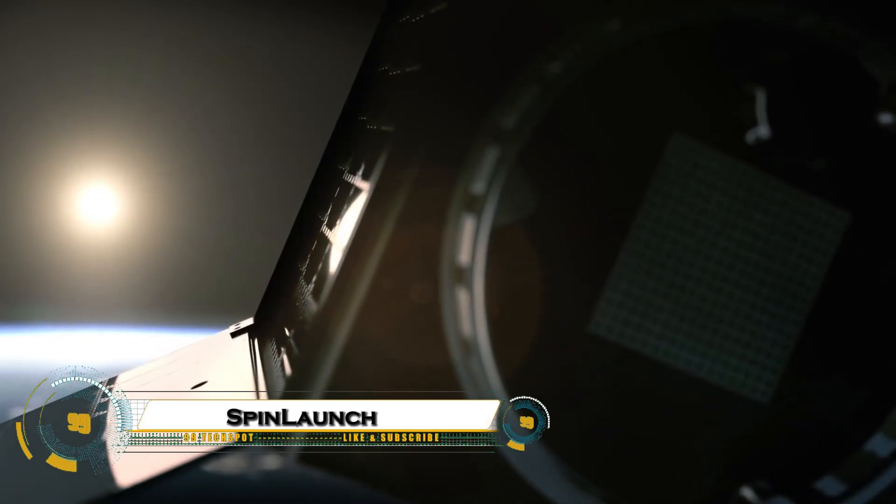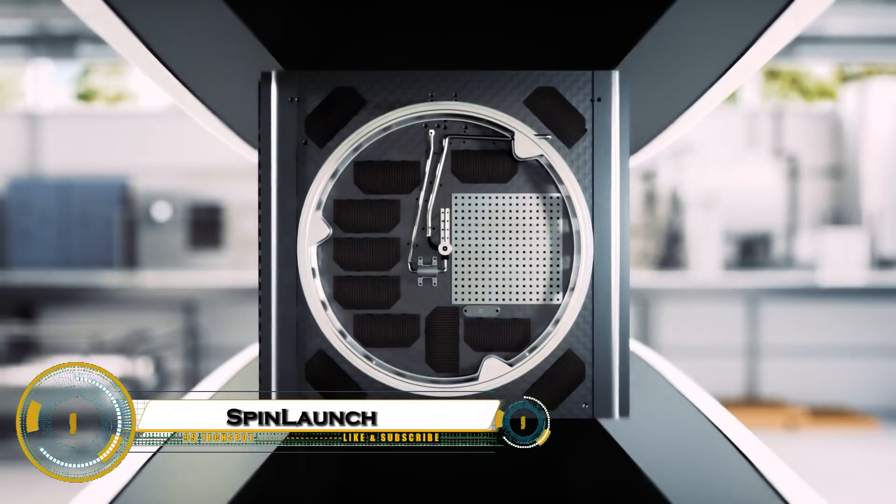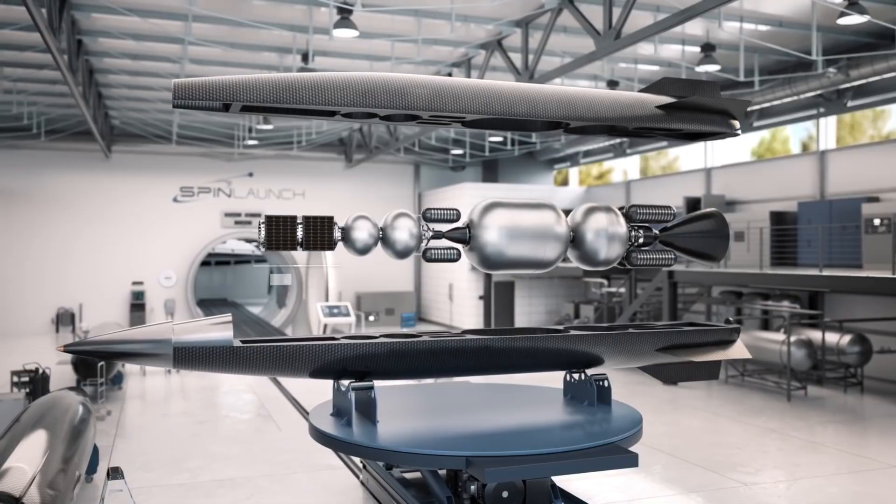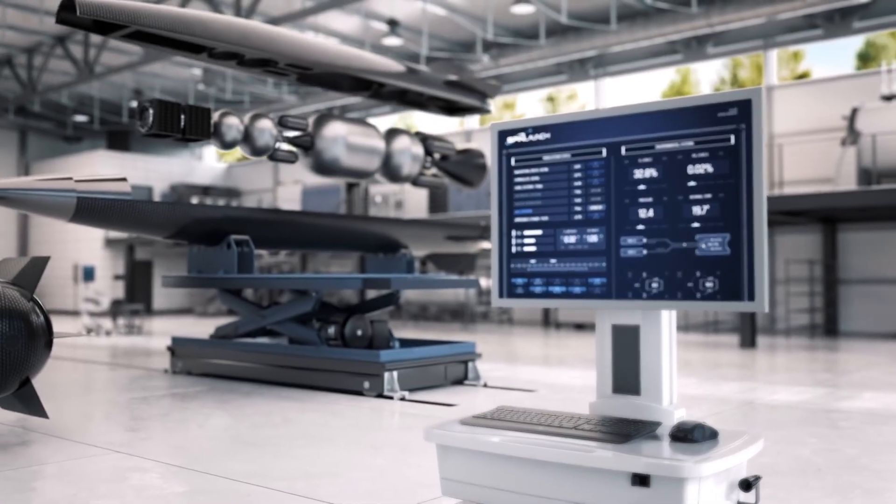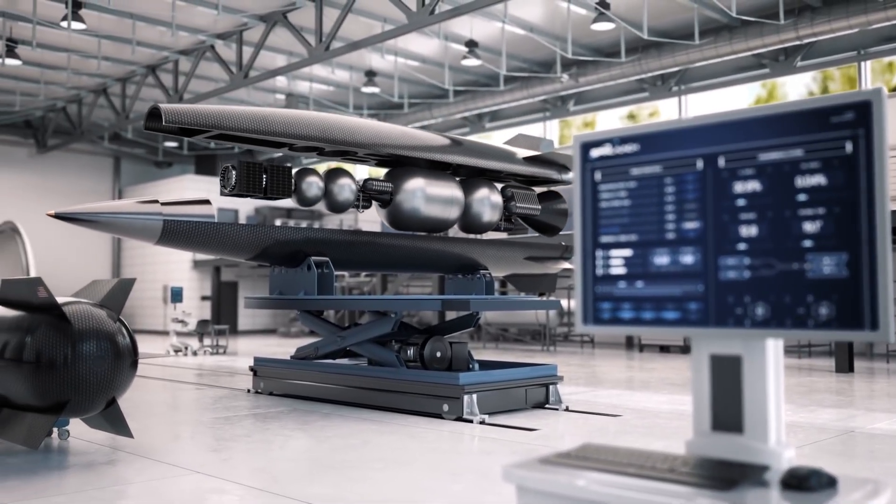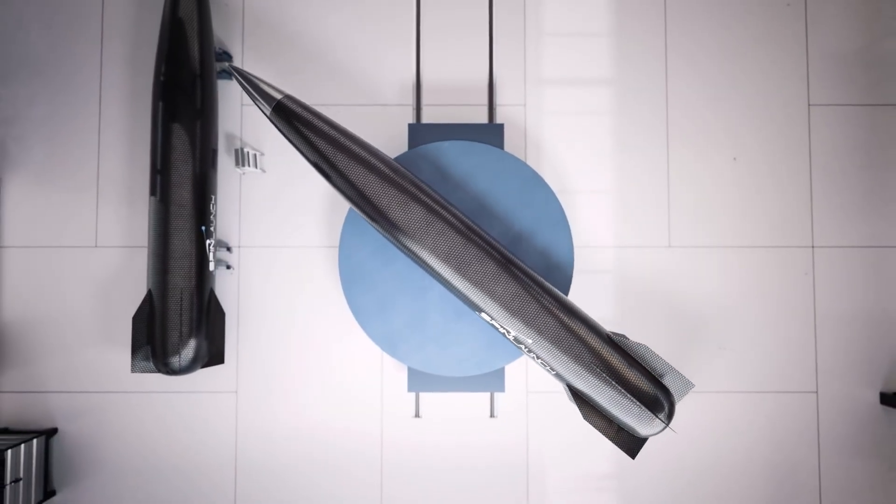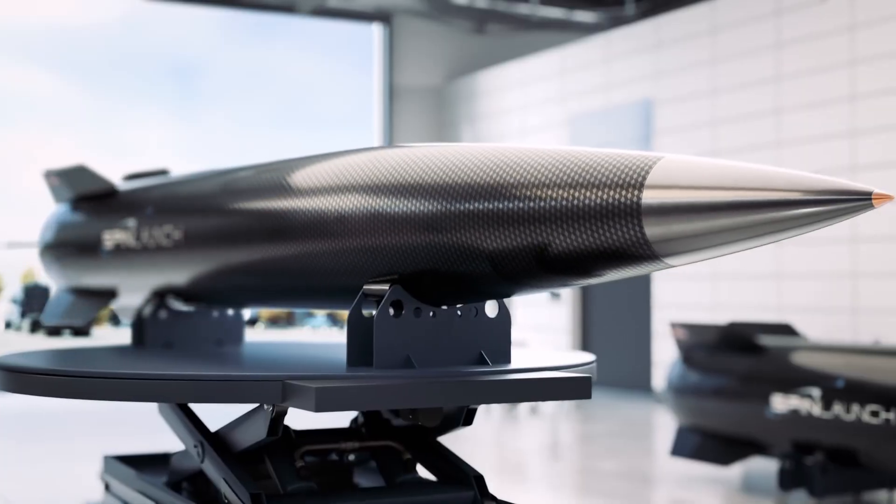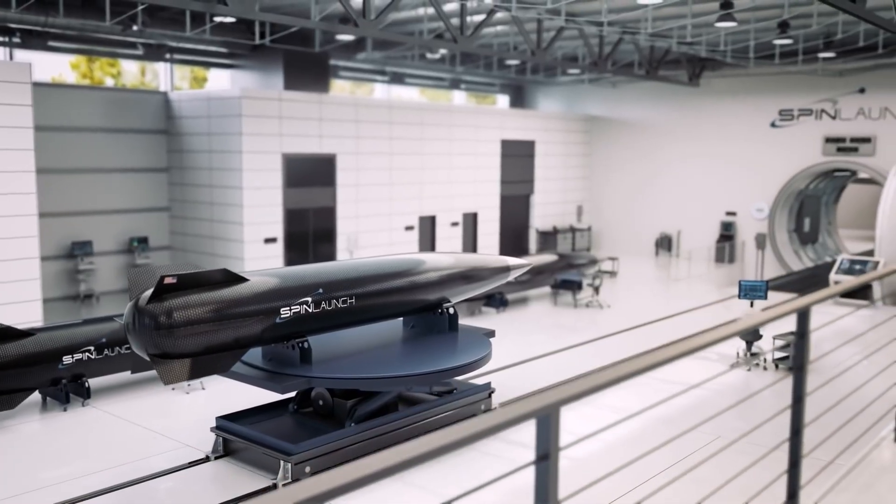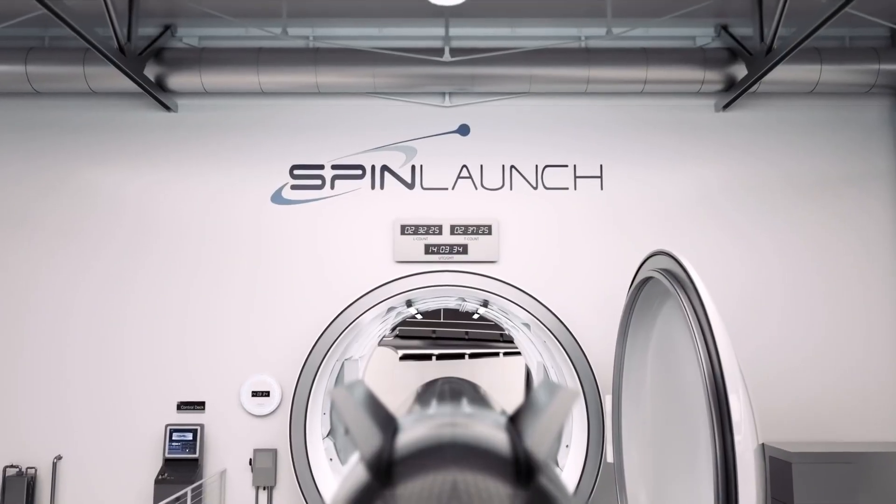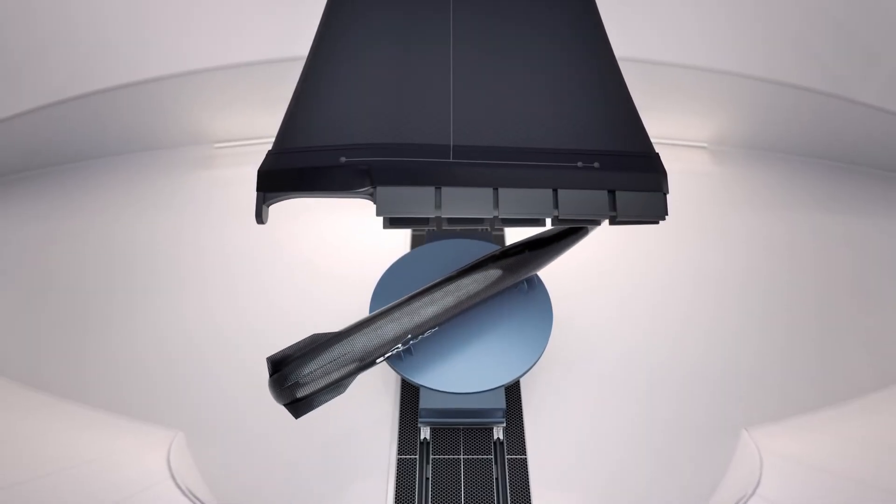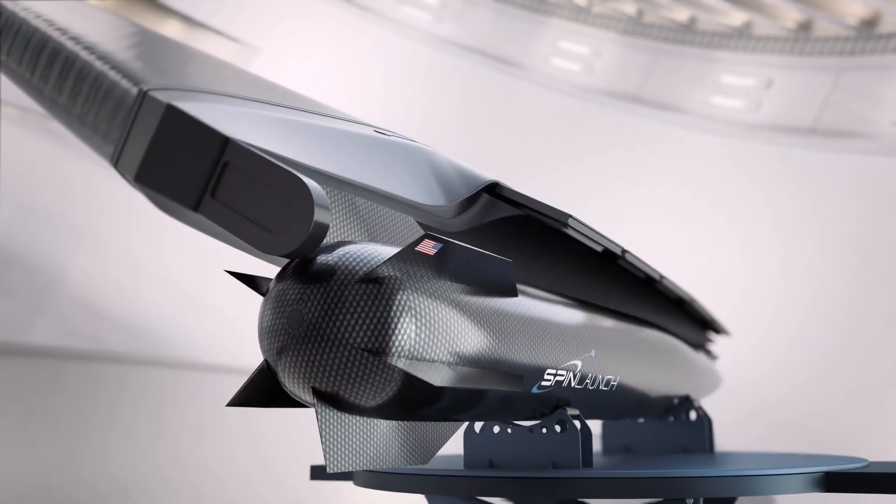SpinLaunch is a revolutionary space technology company developing a completely new way to send payloads into orbit without using traditional rockets. Instead of relying on massive amounts of fuel, spin launch uses a gigantic centrifuge to spin a projectile at incredible speeds and then hurl it into the sky at over 5,000 miles per hour. Once the payload reaches high altitude, a small rocket engine ignites to complete the journey into orbit.